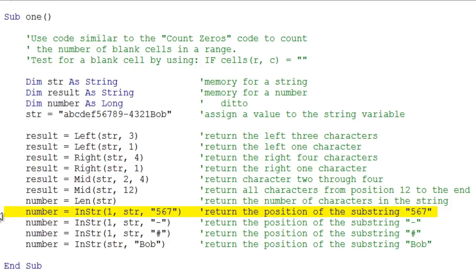The instring function is very useful. It allows us to peer into a string and search for a substring. So in this case we're looking for the substring five, six, seven in our original string. And the first argument you see here tells where to start looking. You can change that. So let's say you wanted to start looking at position five. You'd put a five there, of course, and it would actually start at position five.